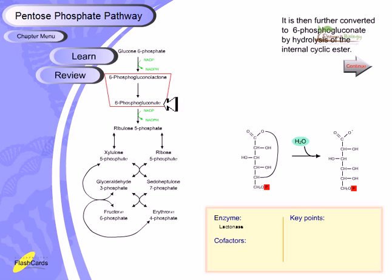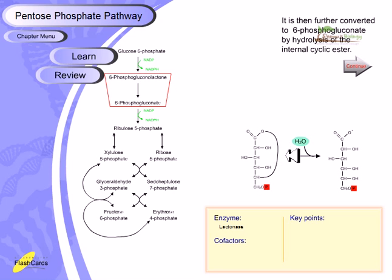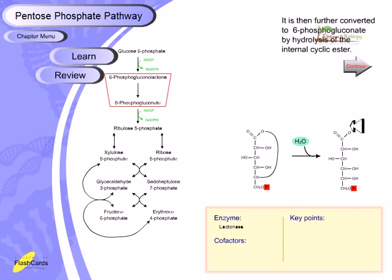In the second step, 6-phosphogluconolactone is further converted to 6-phosphogluconate. This conversion involves hydrolysis — the breaking of the ring bond with the help of water. The enzyme responsible is lactonase, because 6-phosphogluconolactone is a ring or circular form, and lactonase breaks this circular form via hydrolysis to produce the simpler, linear structure of 6-phosphogluconate.